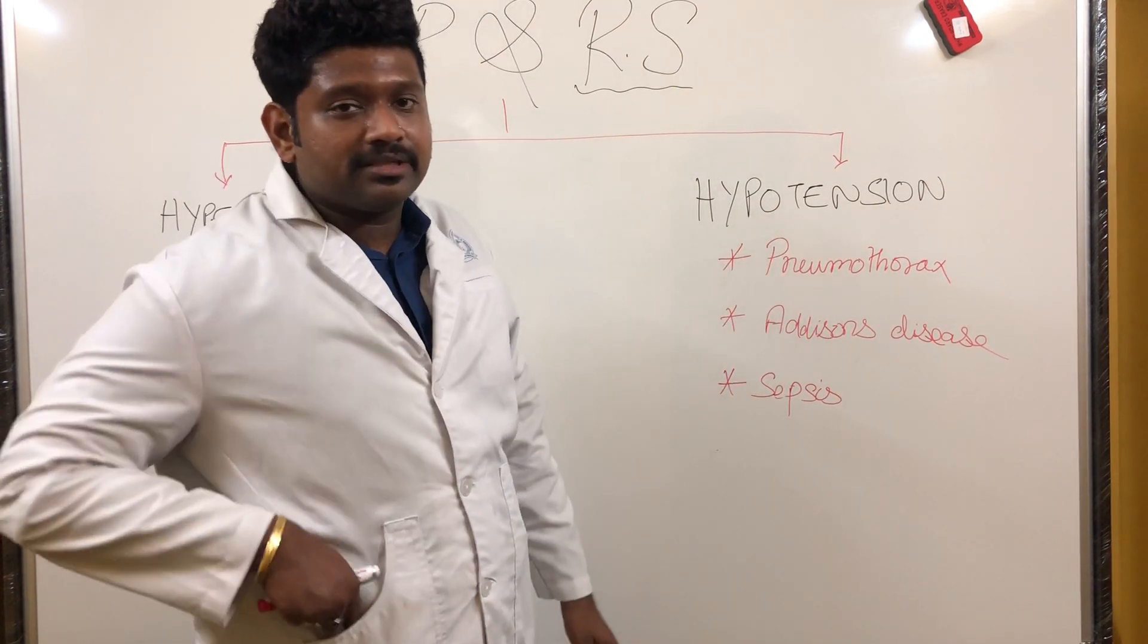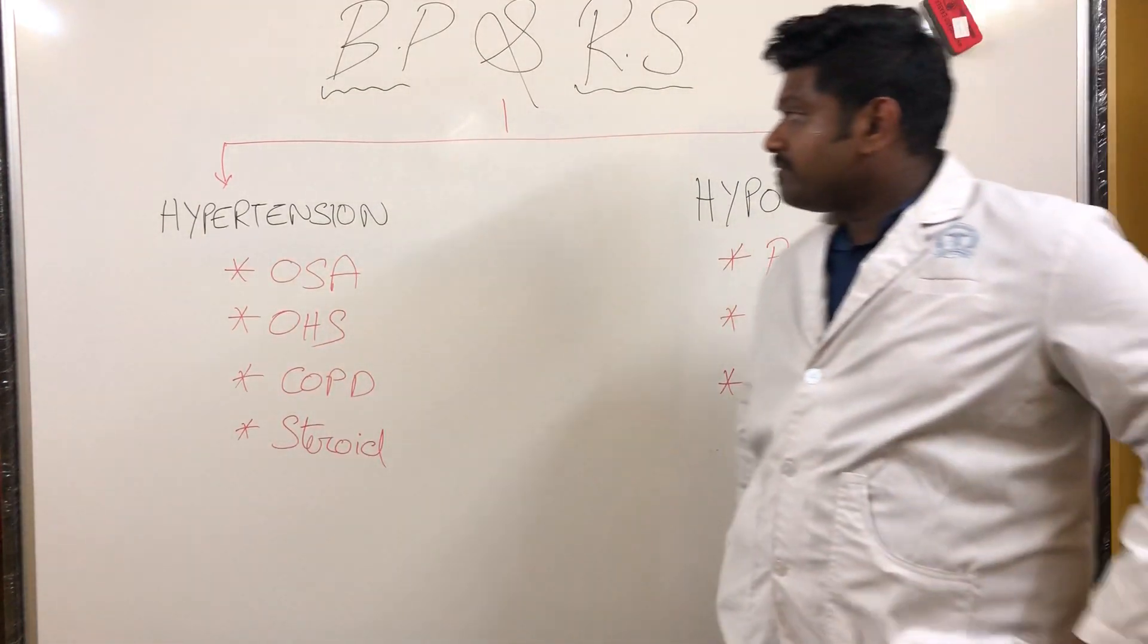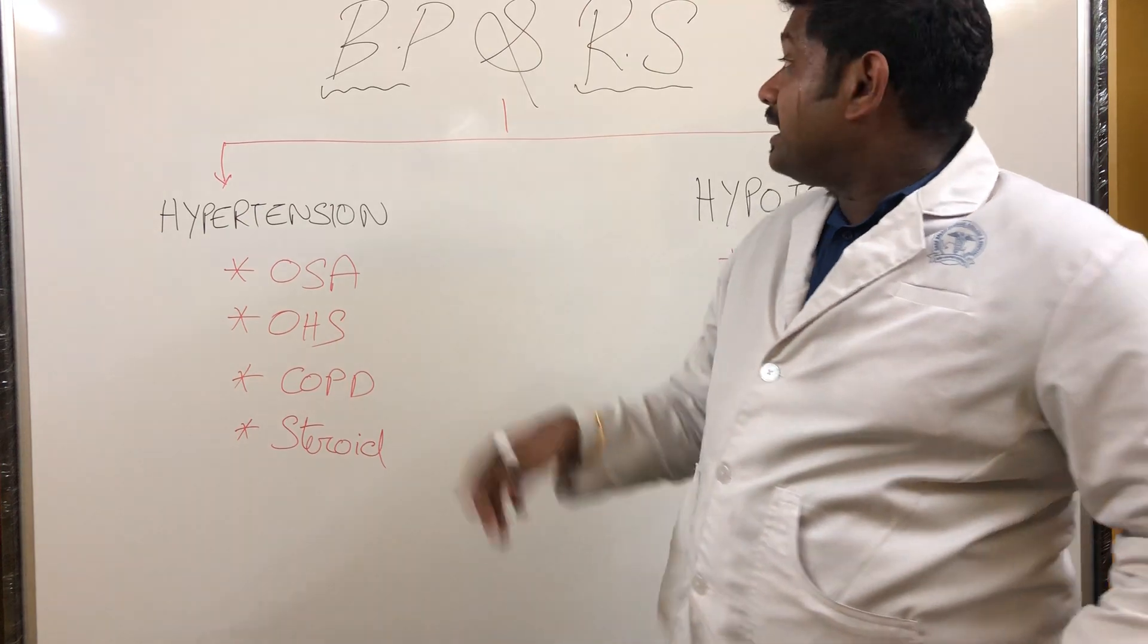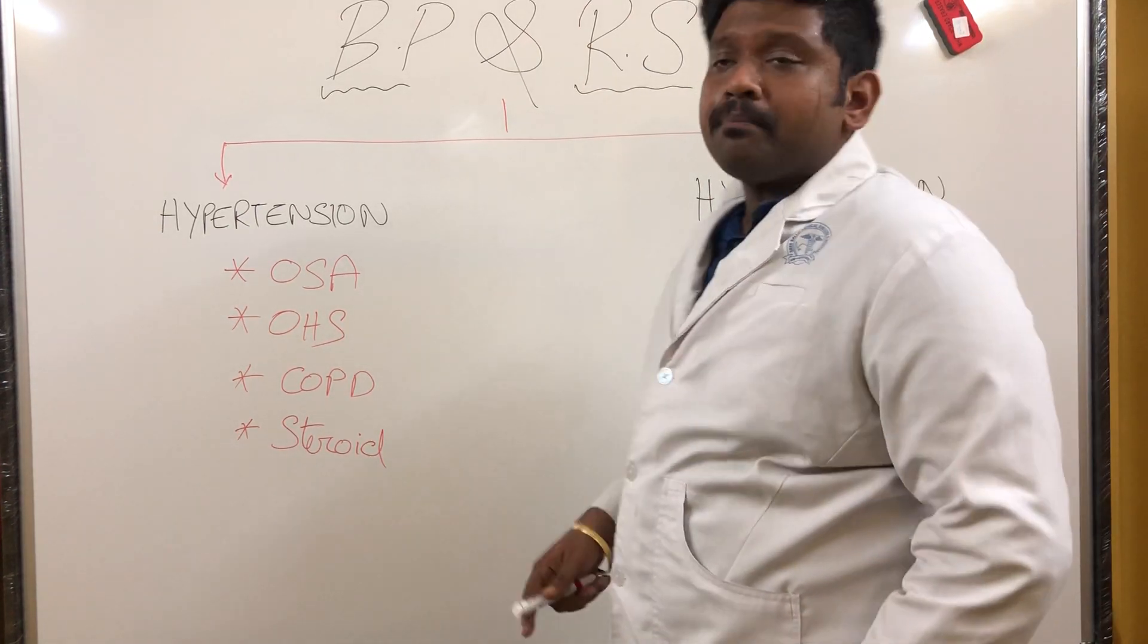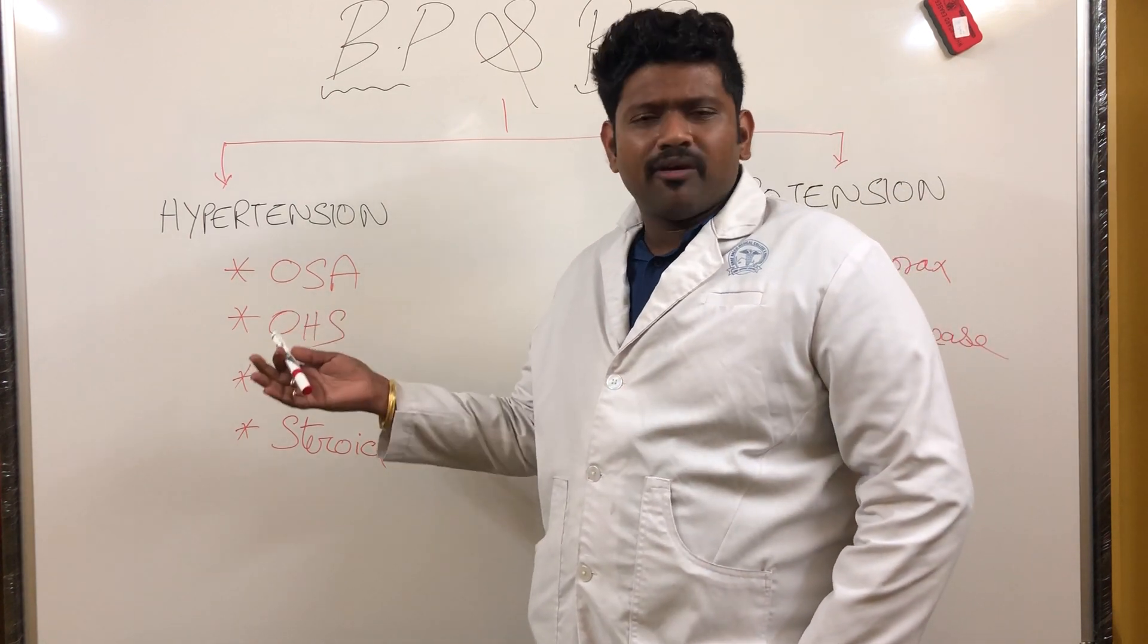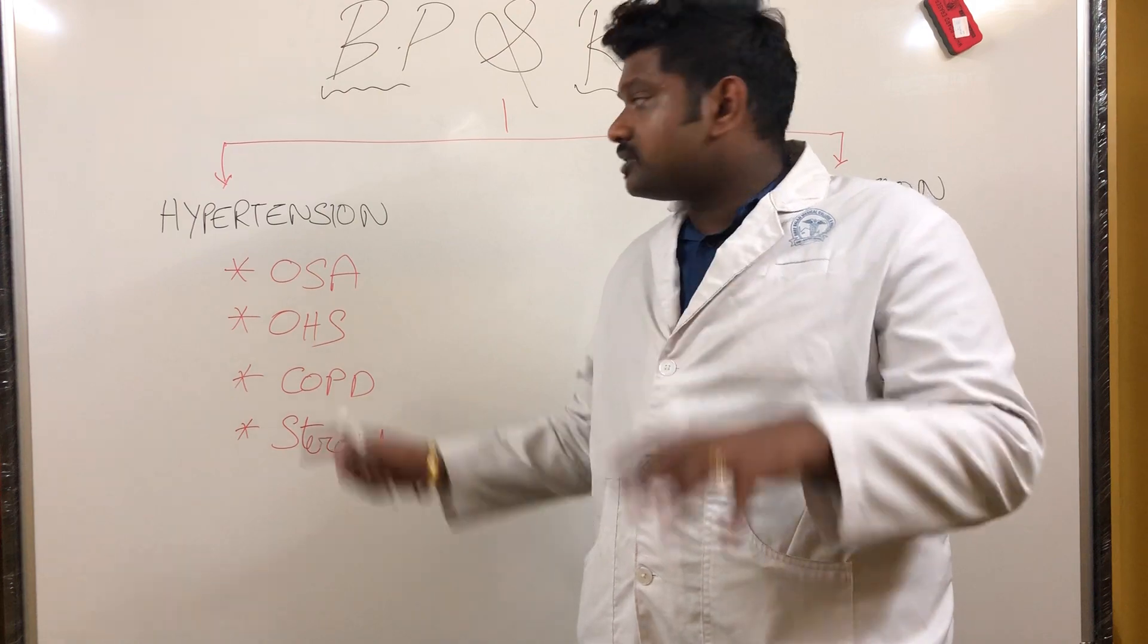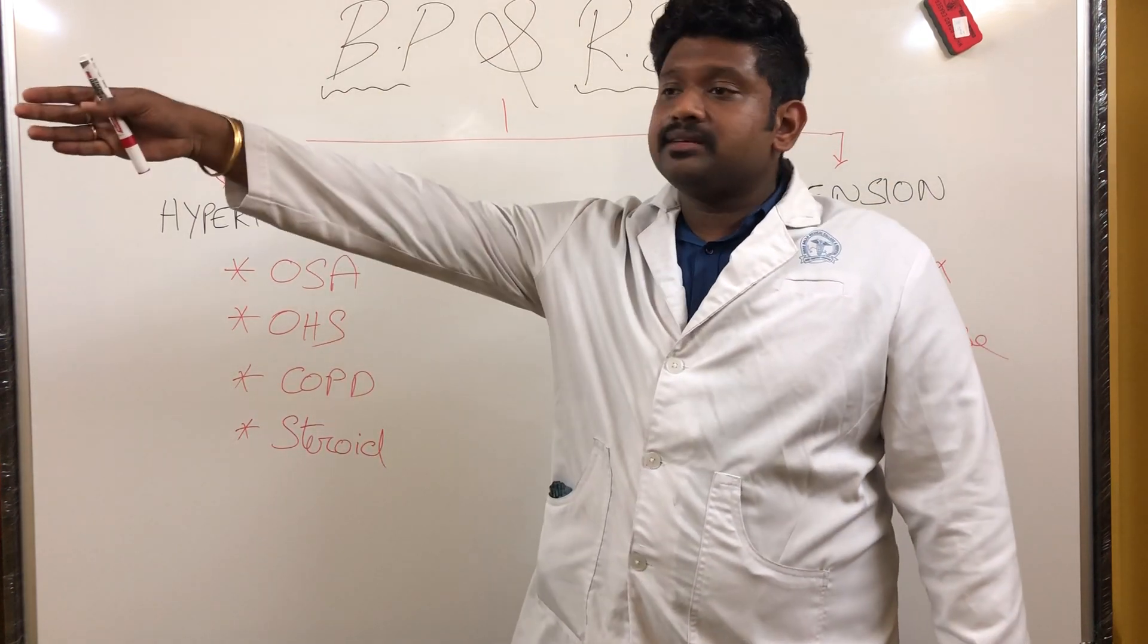So blood pressure and respiratory system in view of hypotension: tension pneumothorax as first differential, Addison's if that scenario matches, sepsis if that scenario matches. Now coming to the second perspective - if the patient has high blood pressure, hypertension more than 140/90, and has some respiratory conditions. What respiratory conditions can present with high BP? Number one: OSA, obstructive sleep apnea. Many of my OSA patients in personal practice have hypertension.